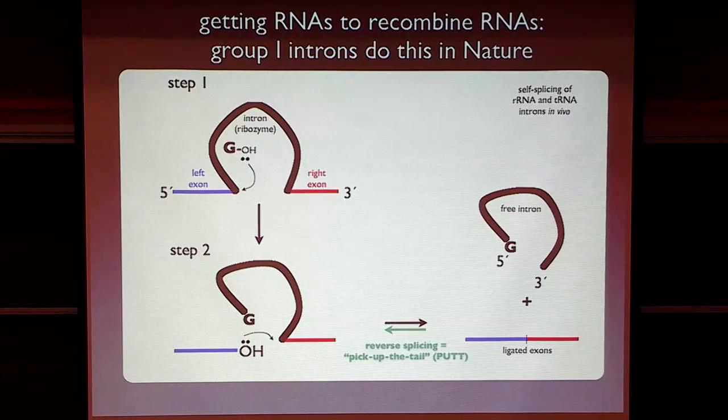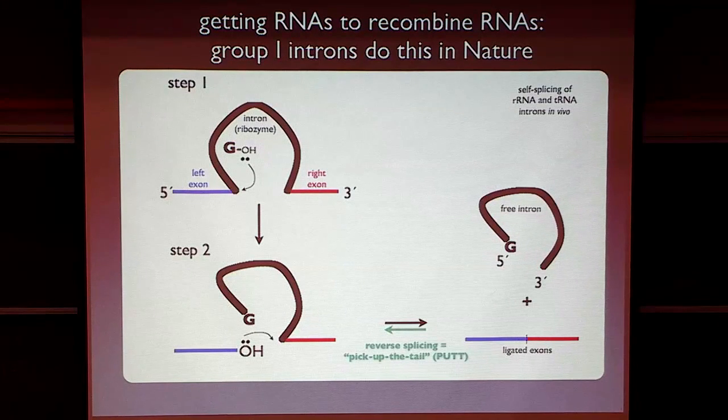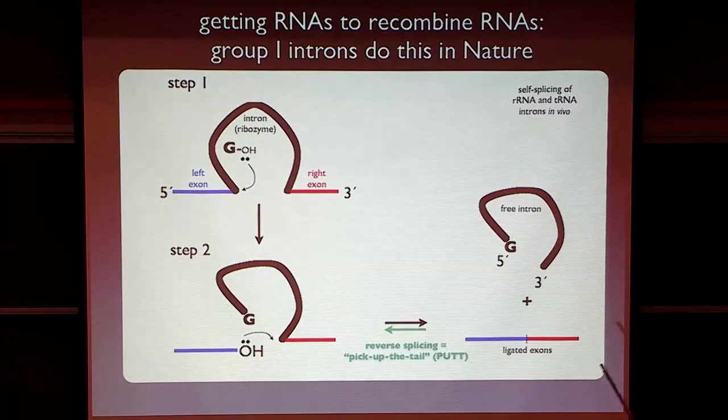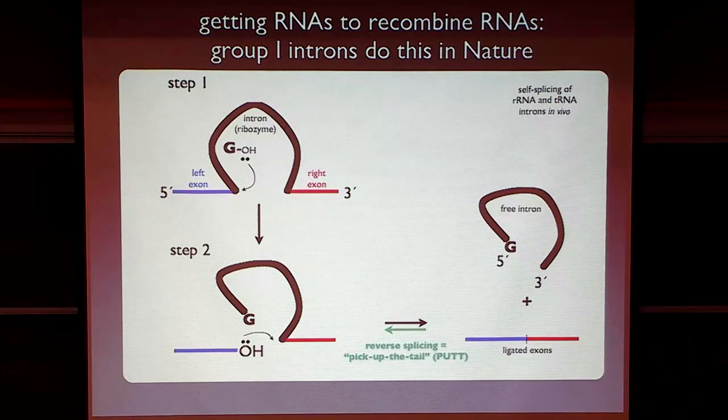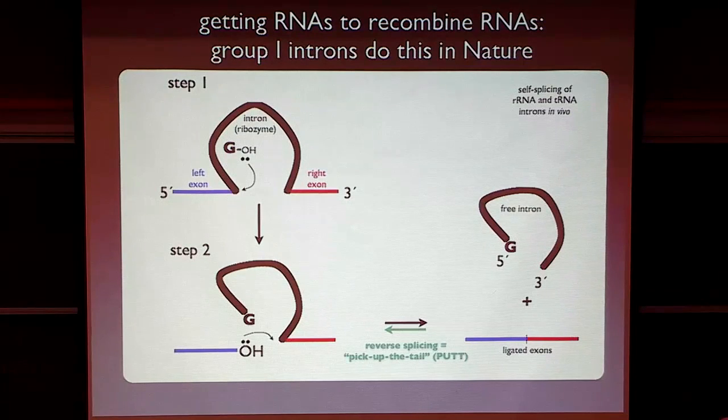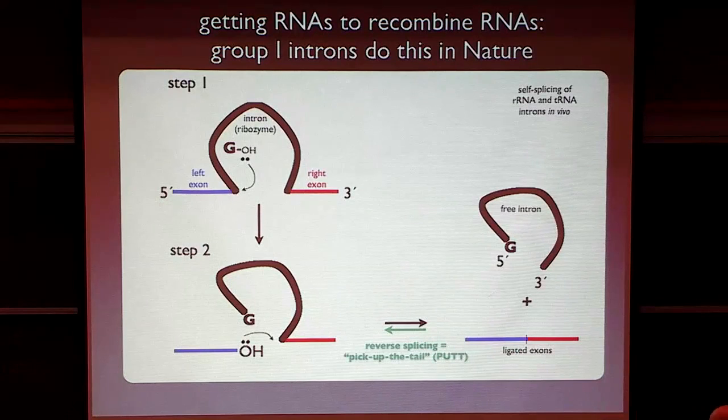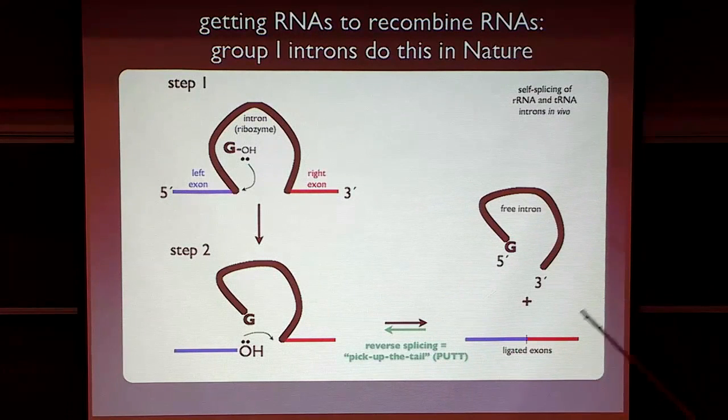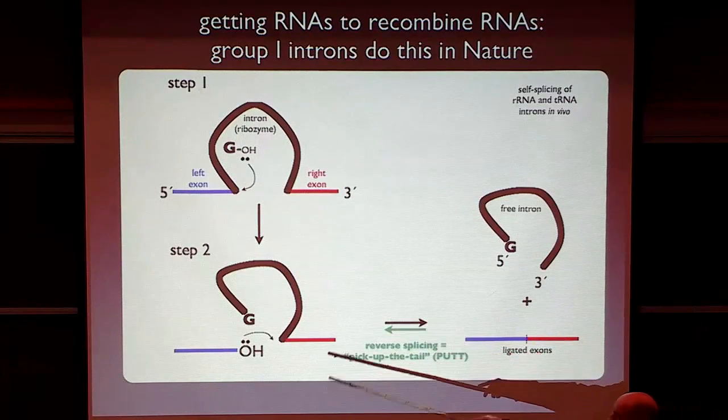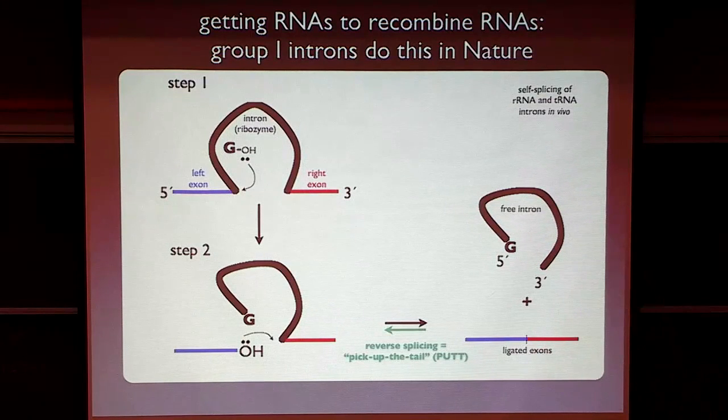Group 1 introns, which were discovered by Tom Cech, actually perform recombination reactions. They are self-splicing RNAs, so the black portion on this diagram is the catalytic RNA, and it splices itself out of a nascent transcript in two sequential transesterification reactions. In the first step, we have a G nucleotide attacking at one spot. Catalyzing a bond breakage, and in the second step, we get the blue fragment attacking the red fragment, and we get the exons ligated together and the intron liberated.